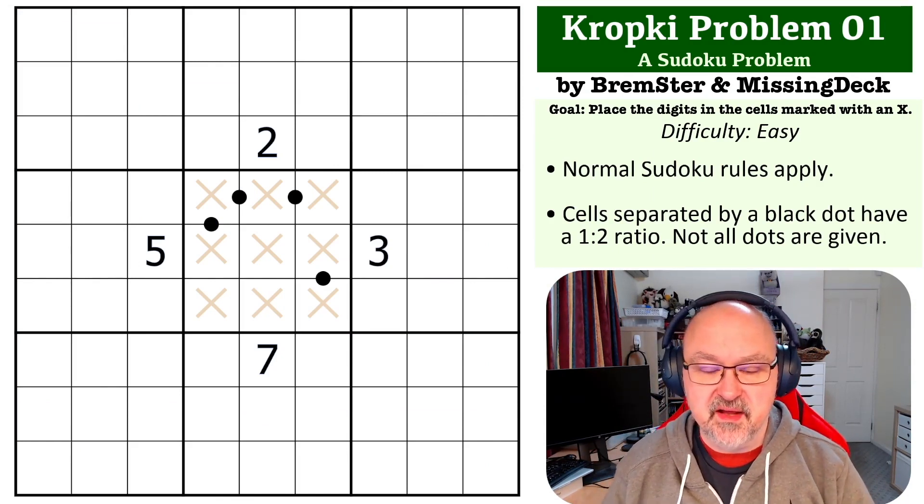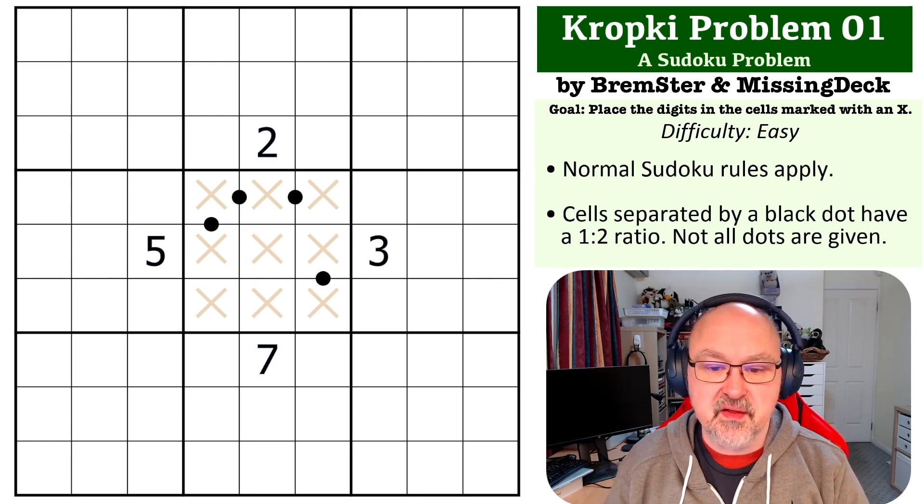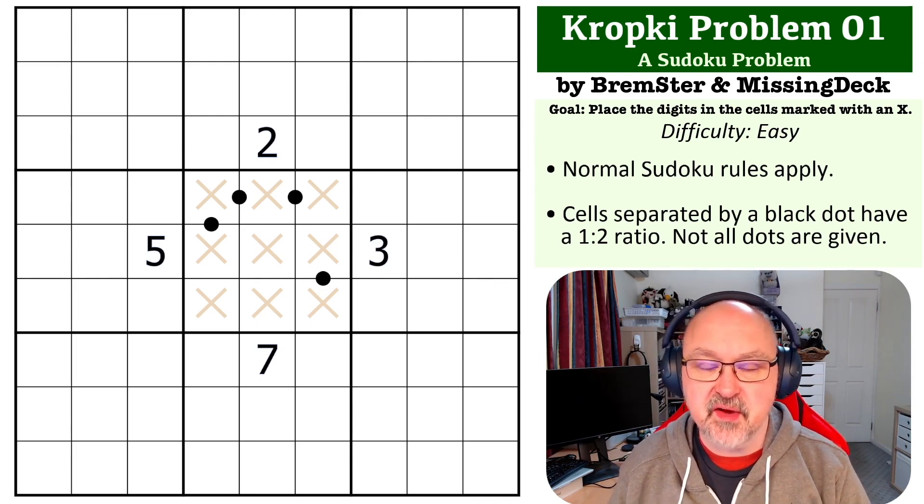The rules on this are that cells separated by a black dot must have a one to two ratio.